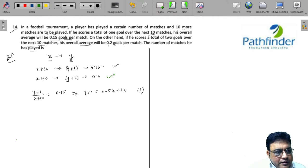And from the second equation, I get (Y plus 2) upon (X plus 10) equals 0.2, which means Y plus 2 equals 0.2X plus 2. This is your equation 2.